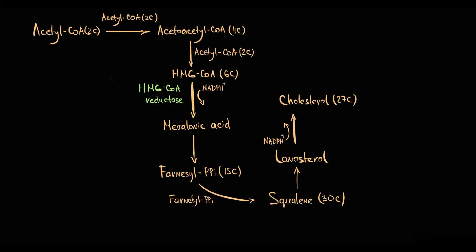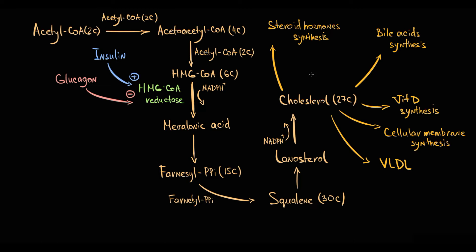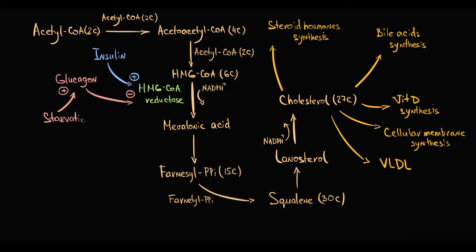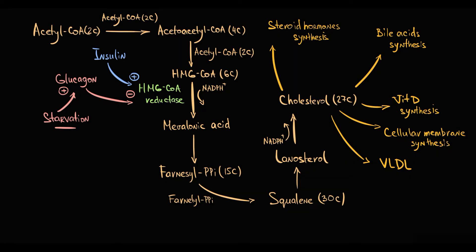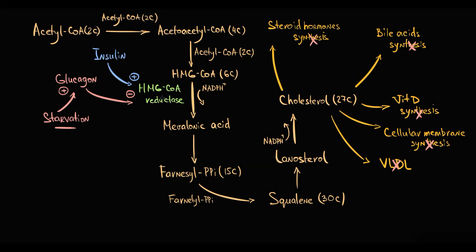In cholesterol synthesis, the major enzyme is HMG-CoA reductase. This enzyme has hormonal regulation: HMG-CoA reductase is stimulated by insulin and inhibited by glucagon. The way to remember this is that cholesterol is used for anabolic processes — synthesis is everywhere — and the hormone that stimulates anabolic processes is insulin. Glucagon is elevated in conditions like starvation, and in starvation, hepatocytes do not want to waste a massive amount of acetyl-CoA molecules for anabolic processes. The organism is trying to preserve energy, so glucagon inhibits HMG-CoA reductase.